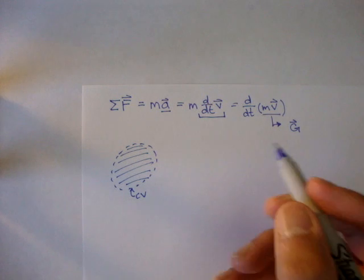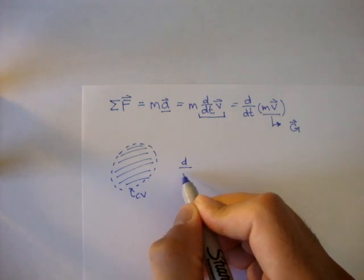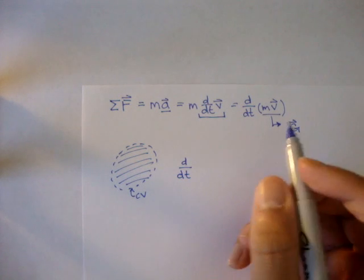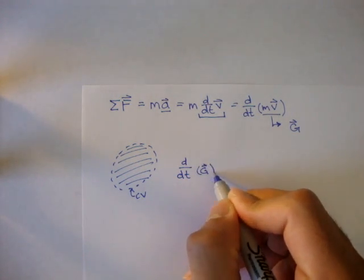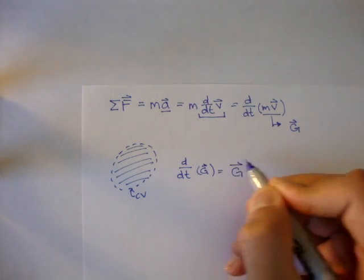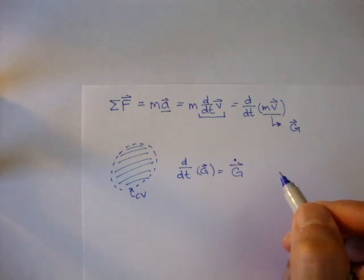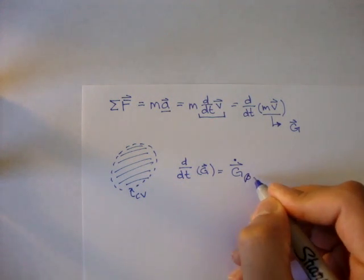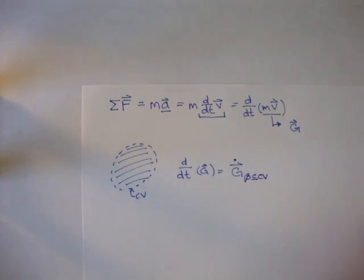And in fluid mechanics, we can say that d/dt of the momentum, which is usually denoted G dot with a little dot on top of it, of the body that's contained inside the control volume.